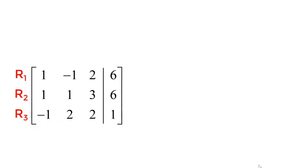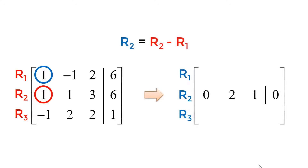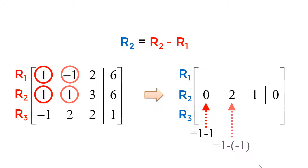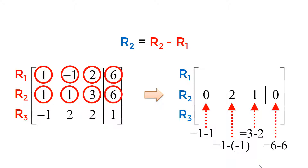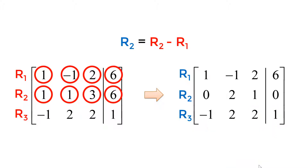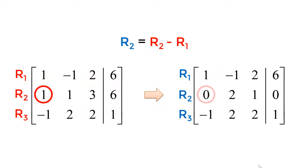Next step is to reduce the element in the second row, first column to 0. To make off-diagonal elements 0, you use the 1 in the diagonal element of the same column as a pivot point, then make it 0 using the row adding operation. Since I have 1 in the second row, first column, I subtract the first row from the second row element by element. My new second row becomes 0 (from 1 minus 1), 2 (from 1 minus negative 1), 1 (from 3 minus 2), and 0 (from 6 minus 6). I keep all elements in the first and third rows the same. You successfully made 0 in the second row, first column.